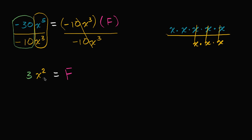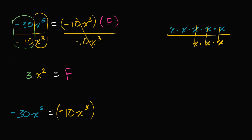So you get f is equal to three x squared. We can write that negative 30x to the fifth is equal to negative 10x to the third times f, and now we know that f is three x squared.